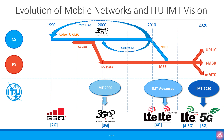In 2G and 3G, the main focus of the mobile network was on voice. Data was secondary. If you look at the two circles on the left, they indicate the circuit switched or CS domain and packet switched or PS domain. In 2G and 3G, the CS domain was used for voice and the PS domain was used for data.